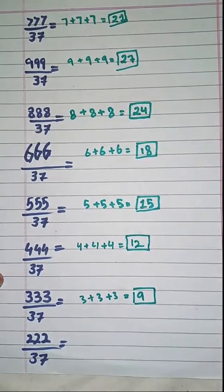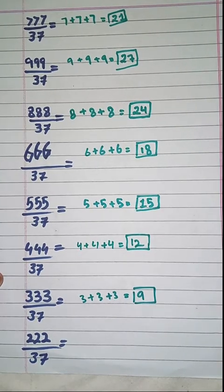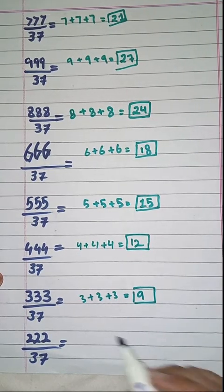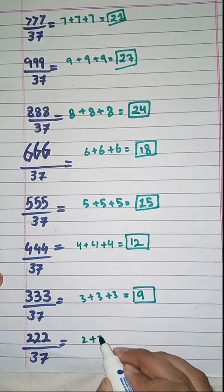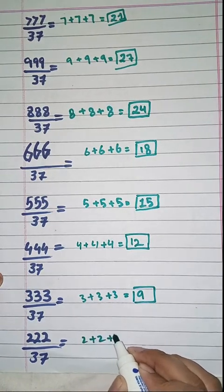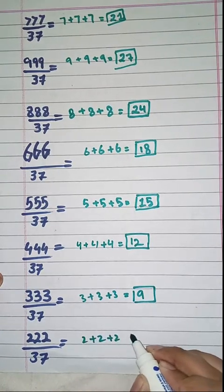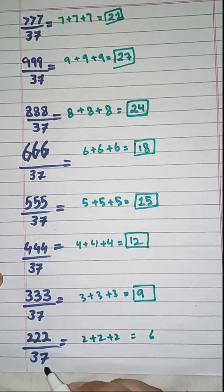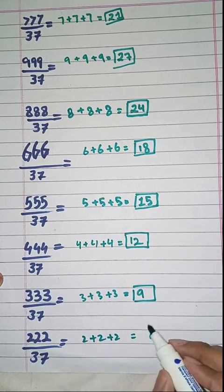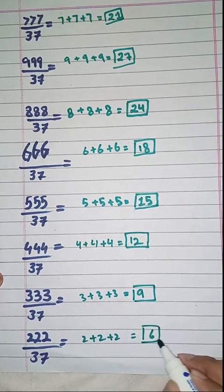Next one: 222 divided by 37. Simply we have to add the digits of this number: 2 plus 2 plus 2, which is equal to 6. So 222 divided by 37 is equal to 6.